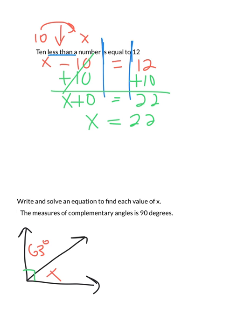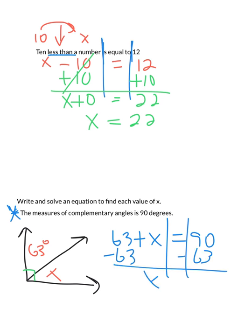Lastly, we have an algebra problem embedded with geometry. We have write and solve an equation to find each value of x. Our hint here, the measures of complementary angles is 90 degrees. These are complementary, so we need to come up with an equation. This box down here tells me it's a right angle. The right angles measure 90, so it equals 90. What equals 90? 63 plus x. I'm going to go ahead and subtract 63. I have x equals 27 degrees. So that's the missing angle.